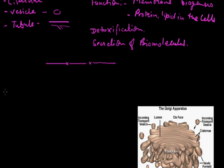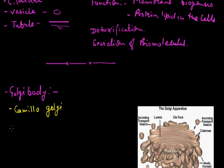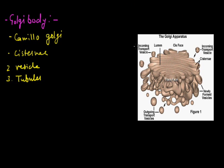The second cell organelle we discuss is the Golgi body, also called Golgi apparatus or Golgi complex. We call it the Golgi body because it was first reported by Camillo Golgi. It is also made up of three structures: first cisternae, second vesicles, and third tubules. The Golgi body has flat tubule-like structures called cisternae. These cisternae are flat tube-like structures, while vesicles are spherical structures and tubules are tube-like structures.